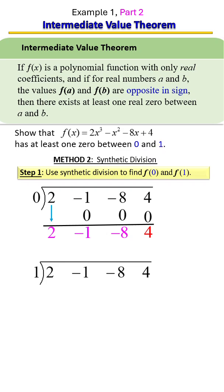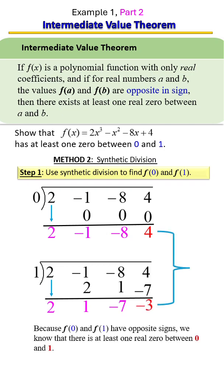We want to see what our output or our remainder is. So we're going to bring down the first term, multiply that with one to get two, bring down the one, multiply that with one to get one, bring down negative seven, multiply that with one to get negative seven, bring down negative three.